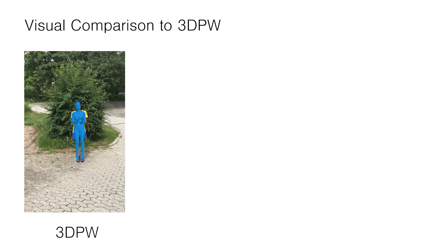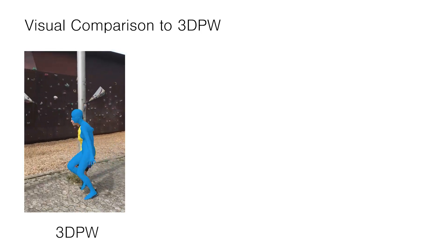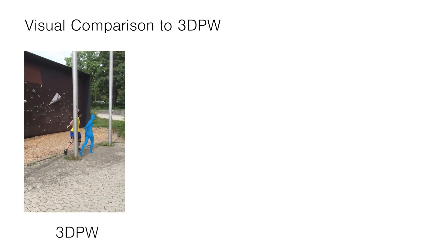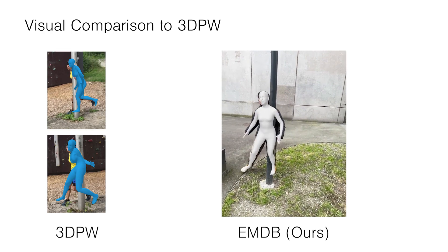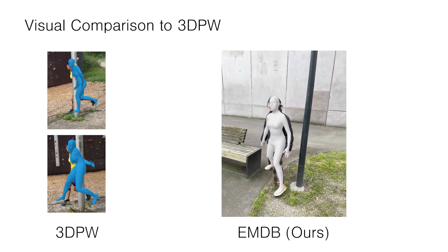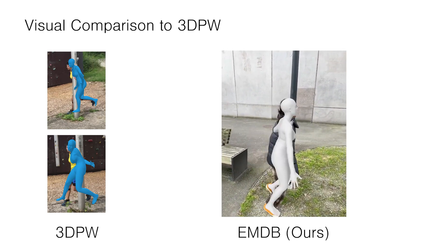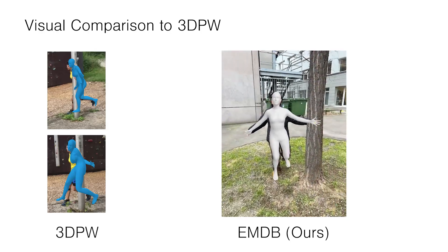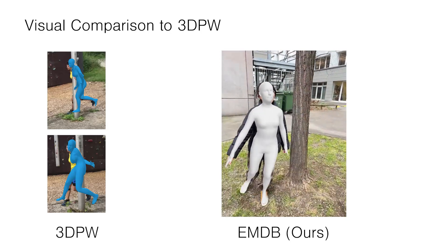Here we visually compare to a sequence taken from our most closely related dataset, 3DPW. We observe that 3DPW sometimes struggles with alignment and unrealistic poses. In contrast, a similar sequence taken from EMDB does not show such artefacts. Note that the image-to-pose alignment is a characteristic that is typically not picked up by any metric.